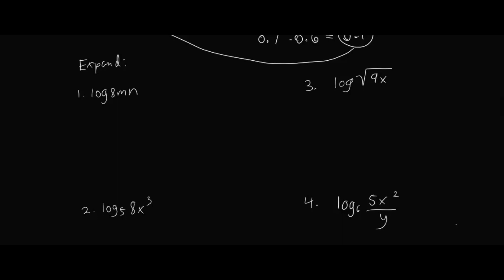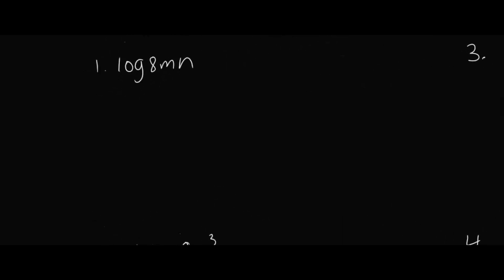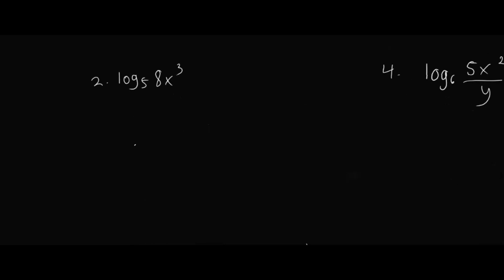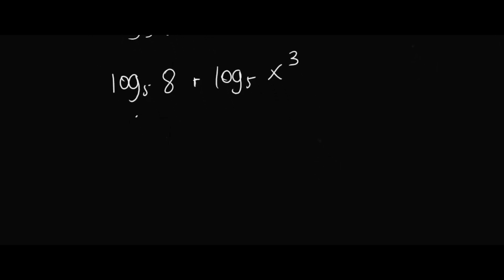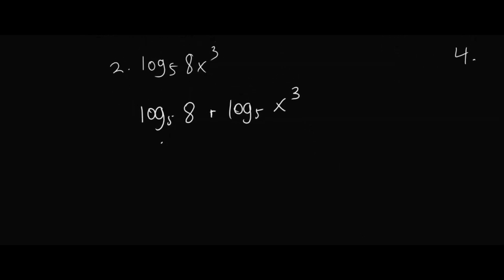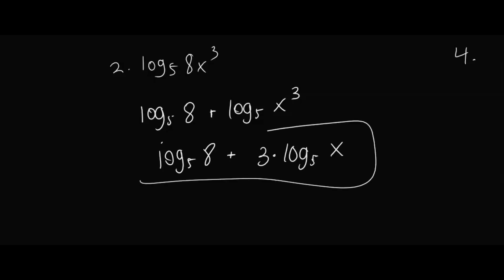Now let's get to some more complicated expansion examples. First, log(8 × m × n): this is simply the product rule, so we can break it into log 8 + log m + log n. Next, log base 5 of (8x³): this is also the product rule, giving log base 5 of 8 plus log base 5 of x³. The x³ term can be expanded further using the power rule to get log base 5 of 8 plus 3 times log base 5 of x. That is the expanded version.